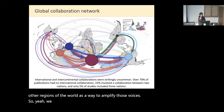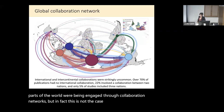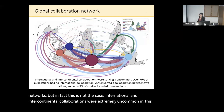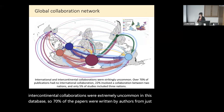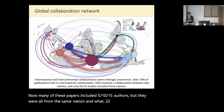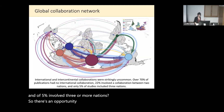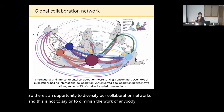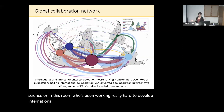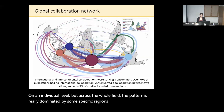We thought maybe the voices of people from underrepresented parts of the world were being engaged through collaboration networks, but in fact this is not the case. International and intercontinental collaborations were extremely uncommon in this database. 70% of the papers were written by authors from just a single nation — many of these papers included 5, 10, 15 authors, but they were all from the same nation. 22% involved two nations and 5% involved three or more nations. So there's an opportunity to diversify our collaborations, and across the whole field, the pattern is dominated by specific regions of the world that tend to be a bit more insular.